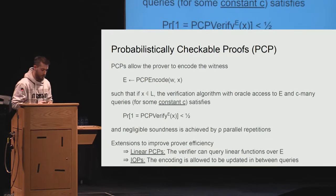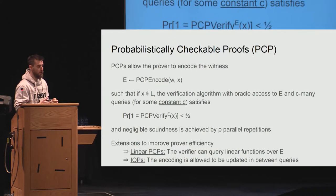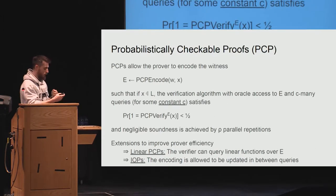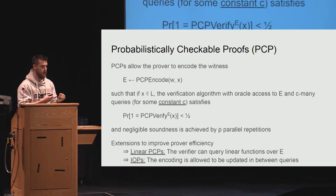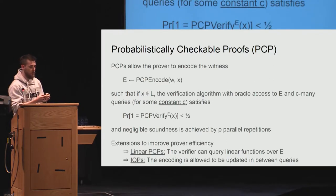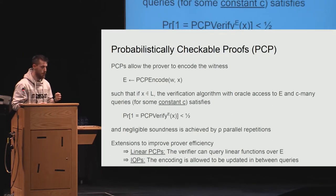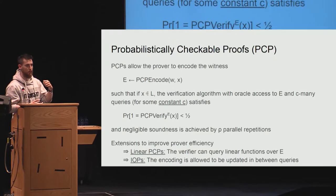PCPs have seen huge improvement in the last years, with many extensions to improve proving efficiency, since the cost of computing the encoding is typically very large. Most of the literature is focused on improving the concrete numbers of this runtime. Specifically, they allow for relaxations of the model. For example, linear PCP allows querying the database as a linear function—you can compute a function of the whole database but only a constant number of times. IOP stands for interactive oracle proof, which is the interactive version of a PCP where the encoding is allowed to change between queries.